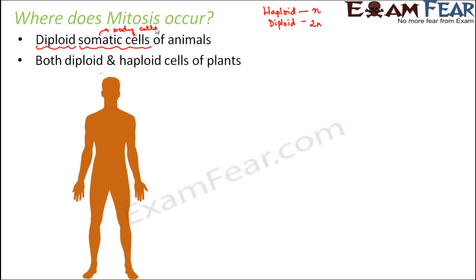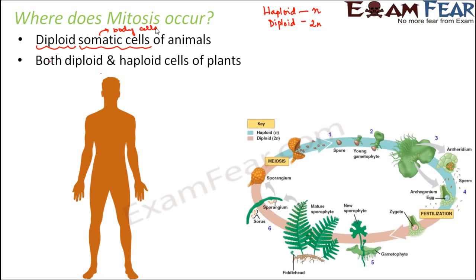However, mitosis occurs in both diploid and haploid cells of plants. In plants, mitosis can be seen in haploid cells as well. For example, in ferns, there is a phase called prothallus which is haploid — it is the haploid phase in the life cycle of fern where alternation of generation occurs. Similarly, the sporangia of certain ascomycetes (fungi) also show mitosis in haploid cells. So mitosis is common for diploid cells in animals and plants, but in plants it also occurs in haploid cells.